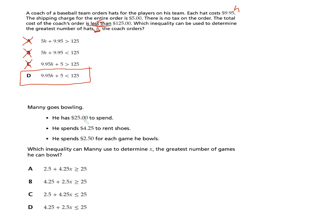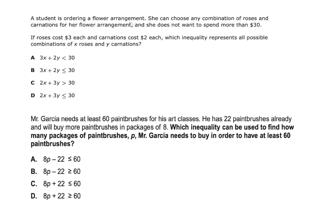Manny goes bowling. He has $25 to spend. He spends $4.25 to rent shoes and $2.50 for each game he bowls. Which inequality can Manny use to determine X, the number of games he can bowl? X is paired with $2.50. He has $25 to spend, meaning he can spend less than or equals to $25. Eliminating A and B for having greater than or equals signs, and noting $2.50 must have X next to it, the answer is D.